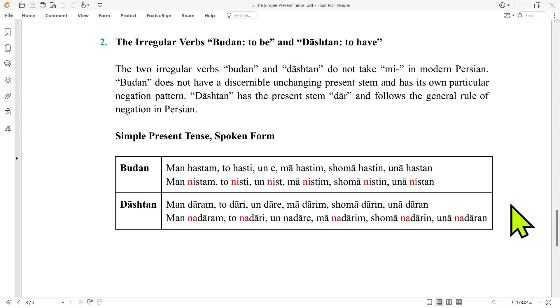And for dashtan in the affirmative, we have man daram, to dari, un dare, ma darim, shoma darin, and una daren.